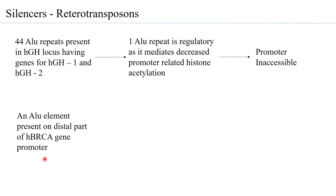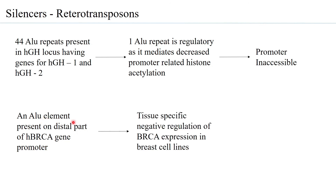Another example: in the distal part of the human BRCA gene promoter, there is an ALU element that is responsible for negative regulation of BRCA expression only in breast cell lines — highly indicative of tissue specificity. In both examples, an ALU element — part of transposons — is acting as a silencer.